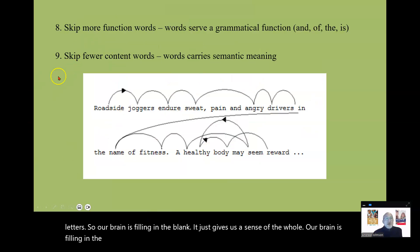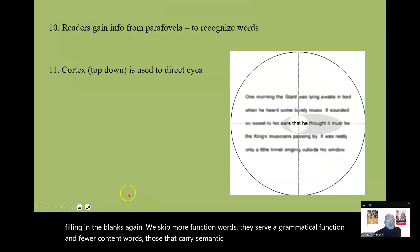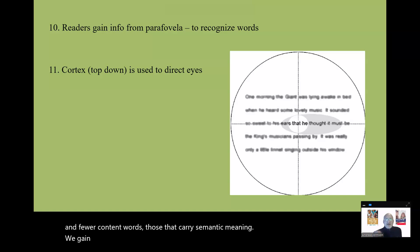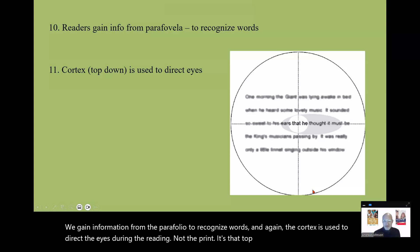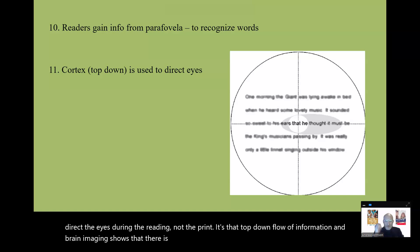Again, we skip more function words. They serve a grammatical function and fewer content words, those that carry semantic meaning. We gain information from the parafoveal to recognize words. And again, the cortex is used to direct the eyes during the reading, not the print. It's that top-down flow of information. And brain imaging shows that there is almost 10 times more information flowing down than moving up during the process of reading.